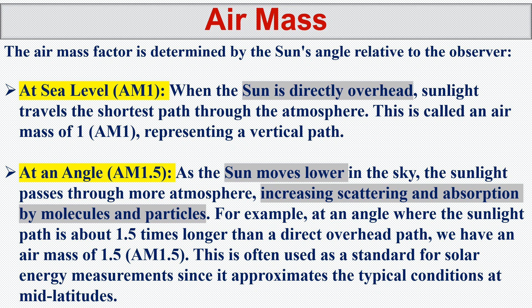Air mass factor is determined by the sun's angle relative to the absorber. At sea level, when the sun is directly overhead — 90 degrees, perpendicular to the panel — air mass is one. We already explained this, and now we double-confirm with the written theory. We always explain and then double-confirm; that is a good way of learning.